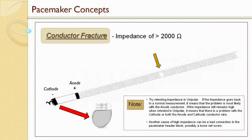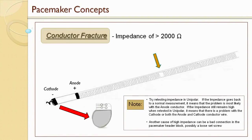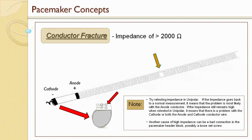When we pace in unipolar, we take the anode ring out of the equation — the pacemaker becomes the anode, and we pace from the cathode at the tip to the pacemaker can. If the impedance measurement goes back to normal, the problem is most likely only with the anode conductor. To be on the safe side, the patient should get a new lead — if one conductor has failed, the other is probably not far behind. If the impedance still remains high in unipolar, there is a problem with the cathode or both conductors. Another cause of high impedance can be a bad connection in the pacemaker header block, possibly a loose set screw.